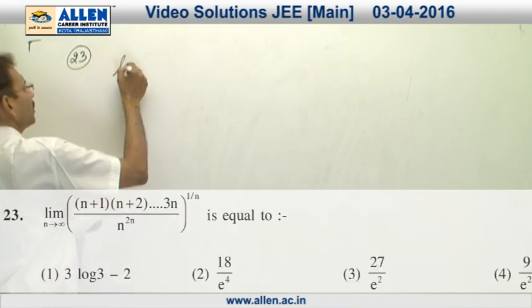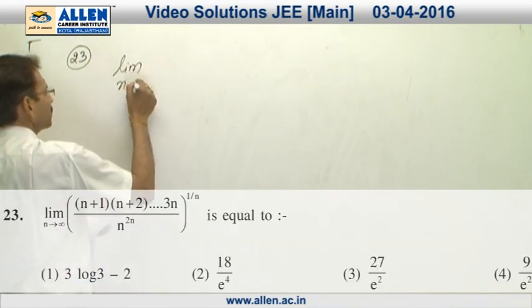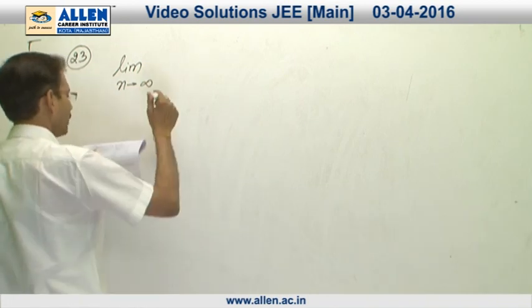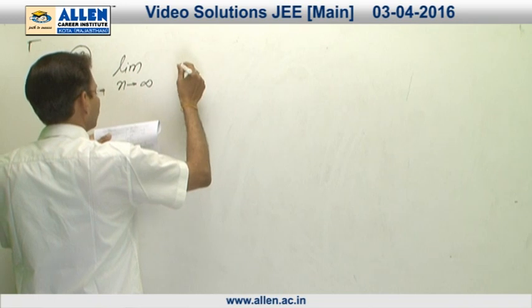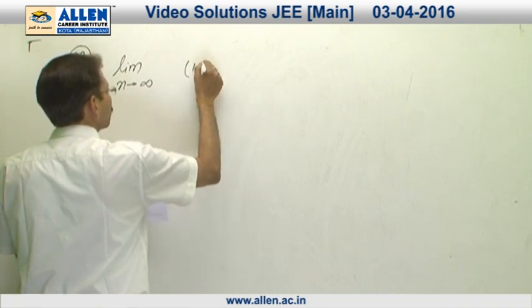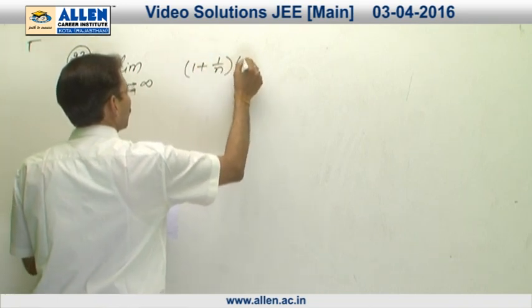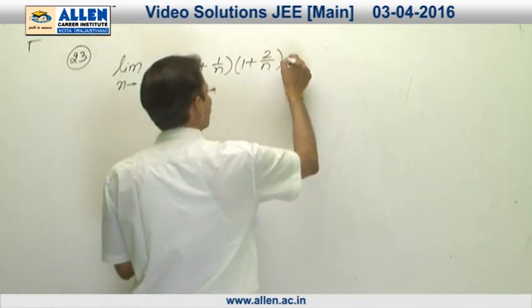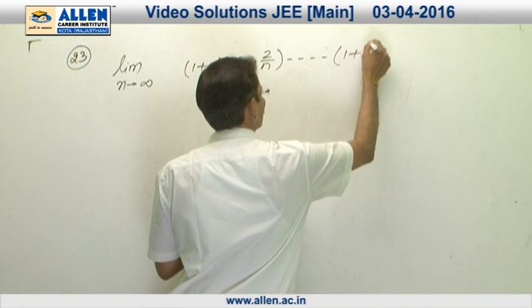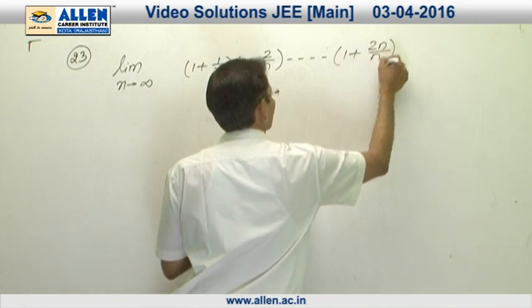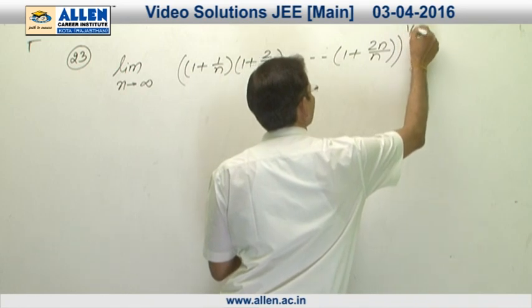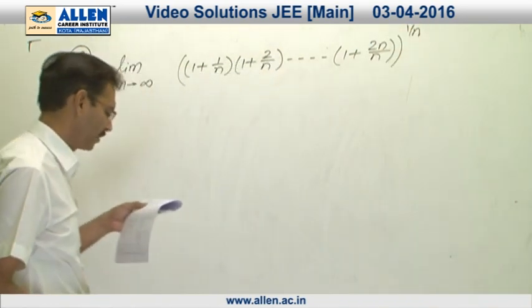In question number 23, we can write this expression this way, limit n approaching to infinity, 1 plus 1 upon n, 1 plus 2 upon n and so on up to 1 plus 2 n upon n, whole raise to the power 1 upon n. We have seen this kind of problem in our sheet.